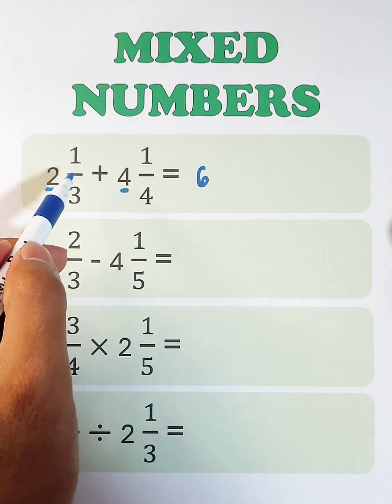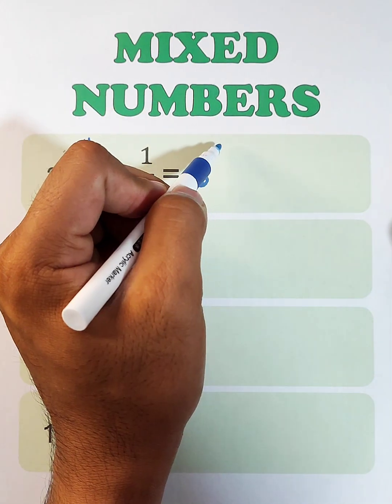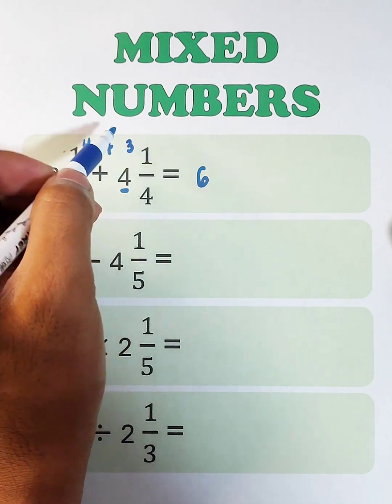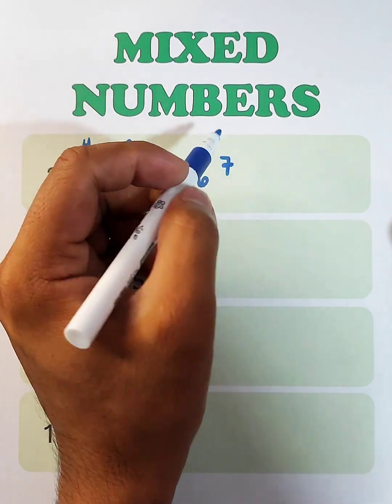Add the fractions. 1 times 4, that is 4, plus 3 times 1, which is 3. 4 plus 3, that would be 7.